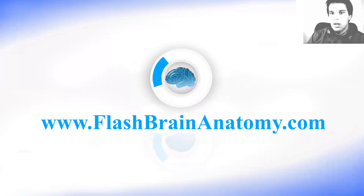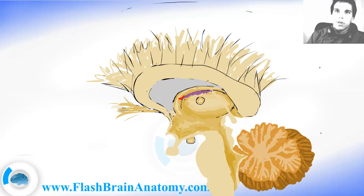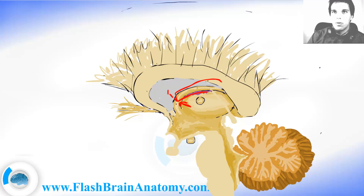Then I illustrated the tela choroidea of the third ventricle here. The tela choroidea also goes through this foramen here, which I said we can go through to reach the lateral ventricle. The tela choroidea also goes there and continues in the lateral ventricle.